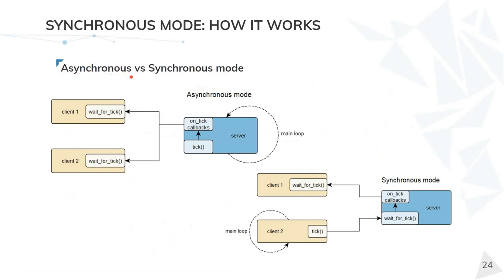The asynchronous mode is the default one. The server has the main loop to create as many frames as it can, as fast as it can. The clients will wait for the frames to come, but the server will not wait for the client, so the client needs to make fast calculations because the frames will come one after the other. Sometimes when the client needs to make complex calculations, this is not a good way of doing things.